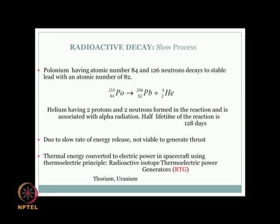Instead, radioactive decay thermal energy is converted to electrical power using the thermoelectric principle in orbiting spacecraft. This is known as Radioactive Isotope Thermoelectric Generators, or RTGs. RTGs are used in several orbiting spacecraft but not for propulsion per se. In addition to polonium, substances like thorium and uranium can also be used in the radioactive decay process.